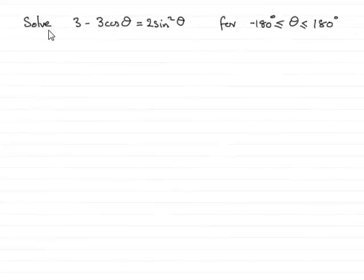Hi, welcome to this example on solving this trig equation here: 3 minus 3 cos theta equals 2 sine squared theta, for theta greater than or equal to minus 180 degrees but less than or equal to 180 degrees.